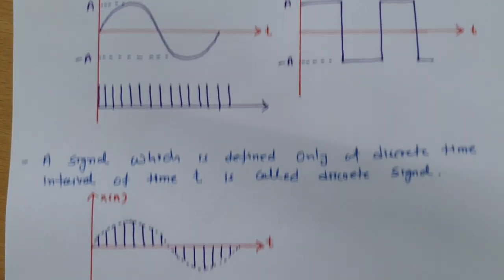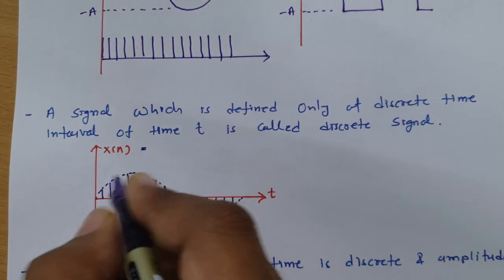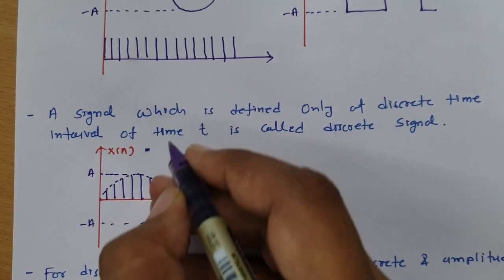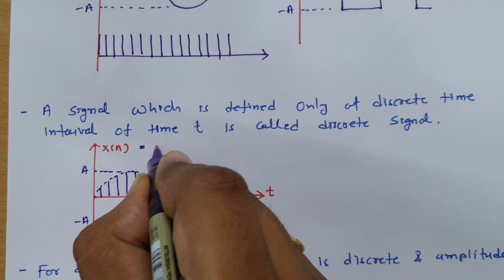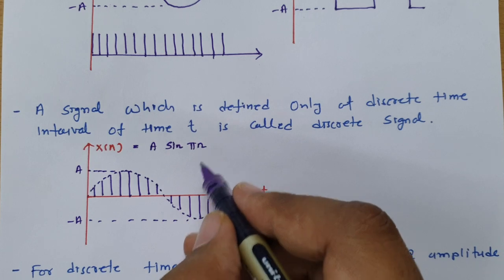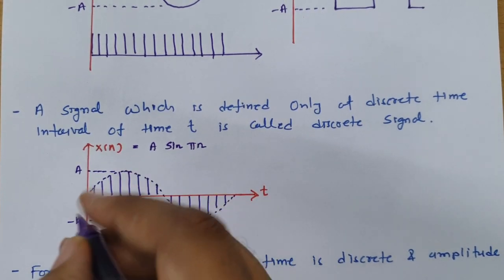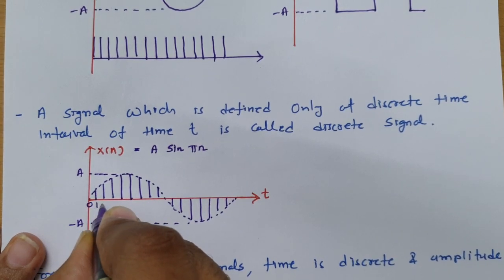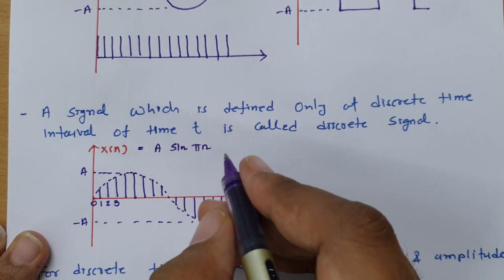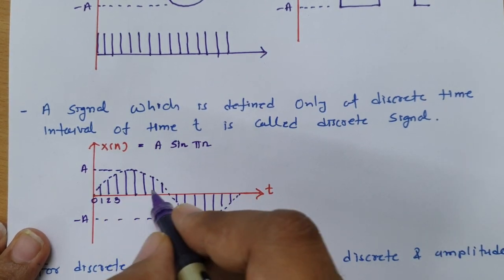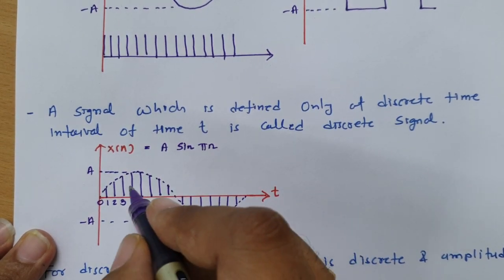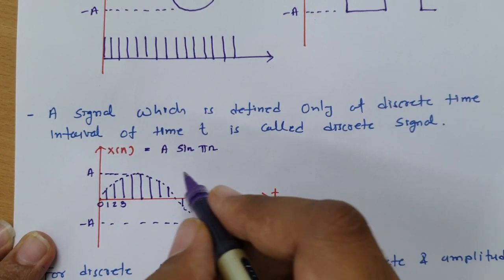For a discrete signal with amplitude varying between plus A and minus A, we can write it as A sin(πn), where n is the number of samples. The 0th sample, first sample, second sample — n shows the index of which sample is available. The spacing between samples is based on the sampling frequency, which defines the interval between two consecutive samples.